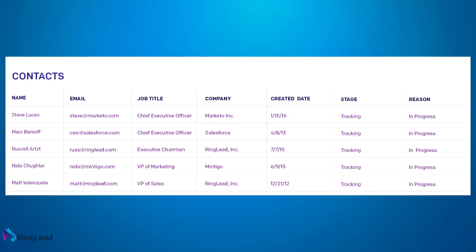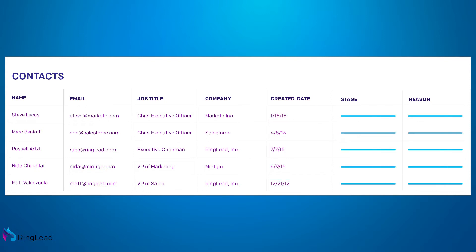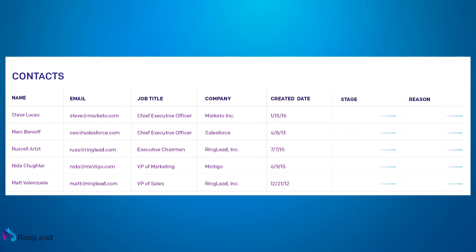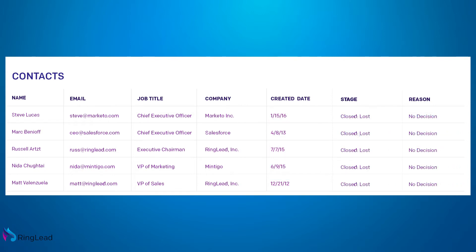We have what you'd call a parking lot — an opportunity stage called 'Tracking.' We can actually take those after a certain period of time; if the opportunity stage has been in tracking for greater than 365 days, we can automatically move that to closed lost without our sales executives having to go back in and make all those changes.